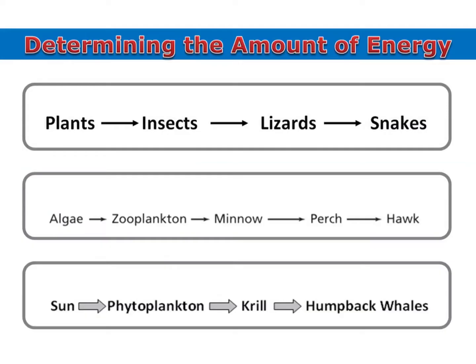It's important that you can determine about how much energy will be in each trophic level in an ecosystem. First we'll look at figuring out about what percent of the original chemical energy has made its way into each trophic level. We'll start with the producers. The producers produce the chemical energy through the process of photosynthesis, so they have 100% of the original chemical energy because they're the ones that produced it.